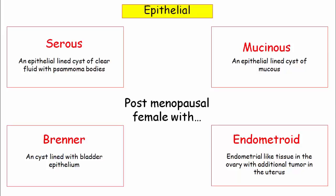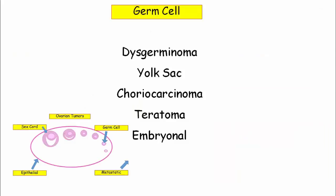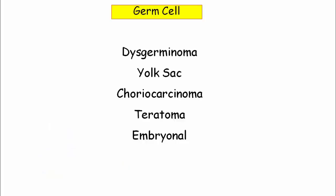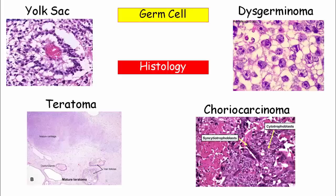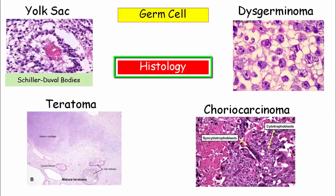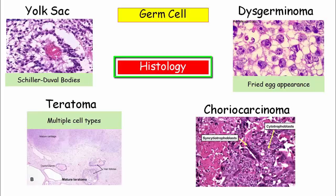Let's move on to the germ cell tumors. There are five types: dysgerminoma, yolk sac, choriocarcinoma, teratoma, and embryonal. Distinguishing features for ovarian tumors are most often histology. Yolk sac tumors have Schiller-Duval bodies; dysgerminomas look like fried eggs; teratomas will have multiple cell types in one image; and choriocarcinomas will have cyto- and syncytotrophoblasts. Embryonal tumors are not specific, and testing, especially about histology, will be very difficult.